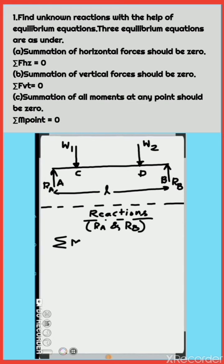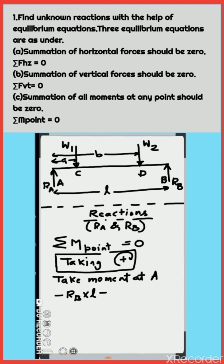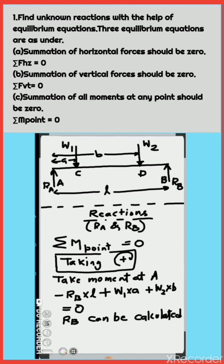b. Summation of vertical forces should be zero. All vertical forces acting in the direction of the positive y-axis are taken as positive: RA + RB − W1 − W2 = 0, from which RB can be calculated. c. Summation of all moments at any point should be zero. All moments in the clockwise direction are taken as positive: RB × L + W1 × a + W2 × b = 0. RB can be calculated and RA can be obtained by deducting RB from the total load.